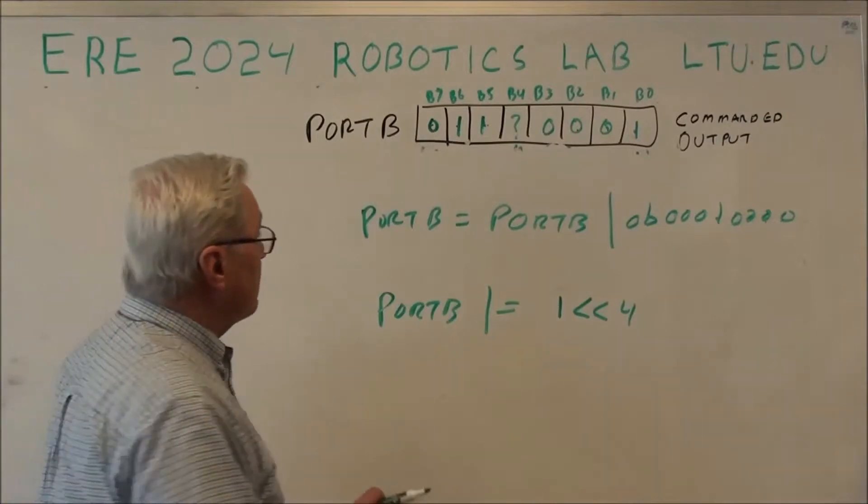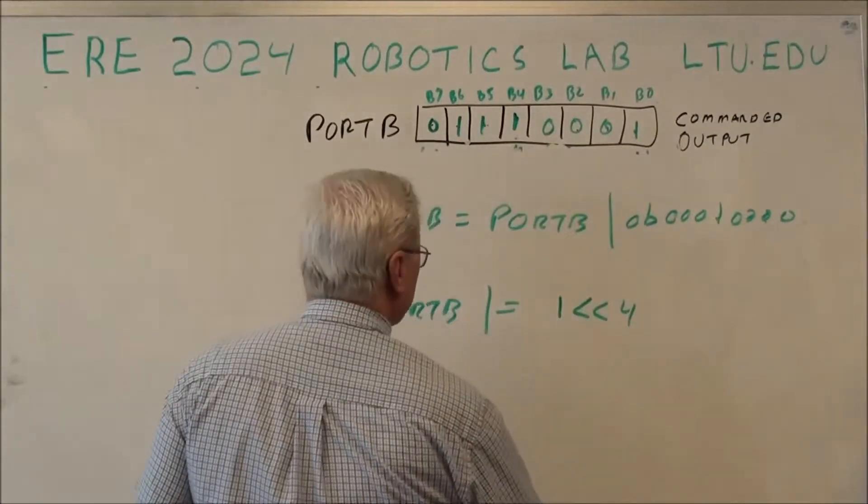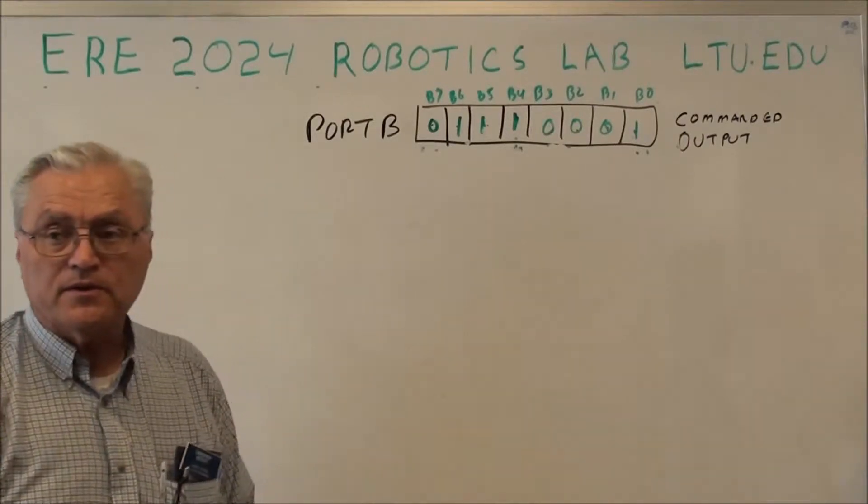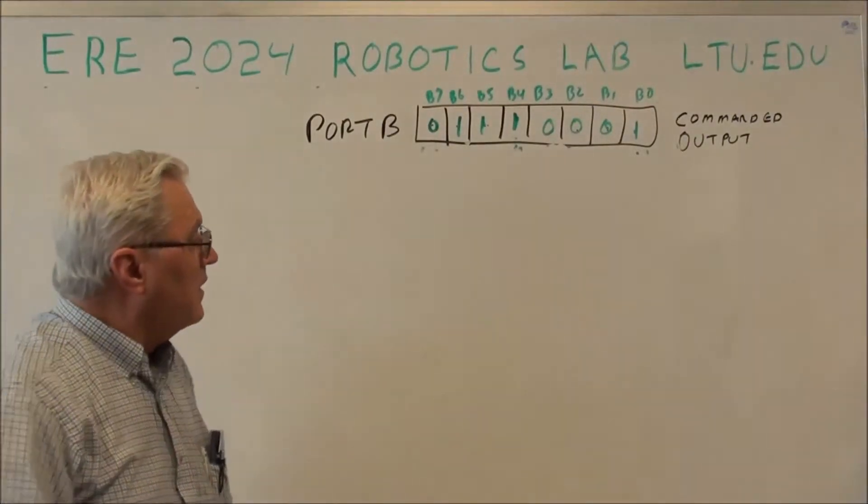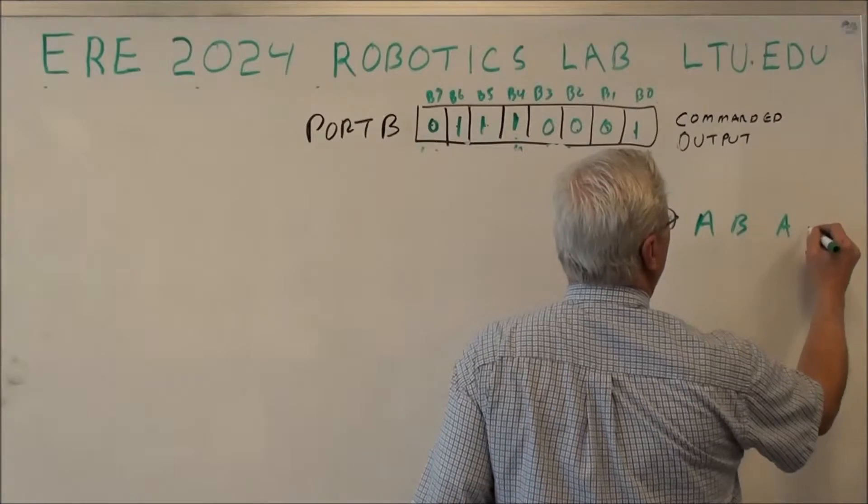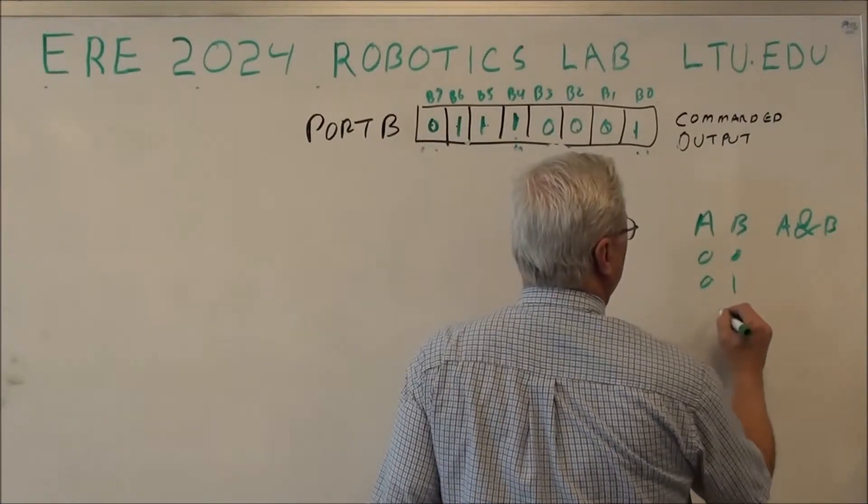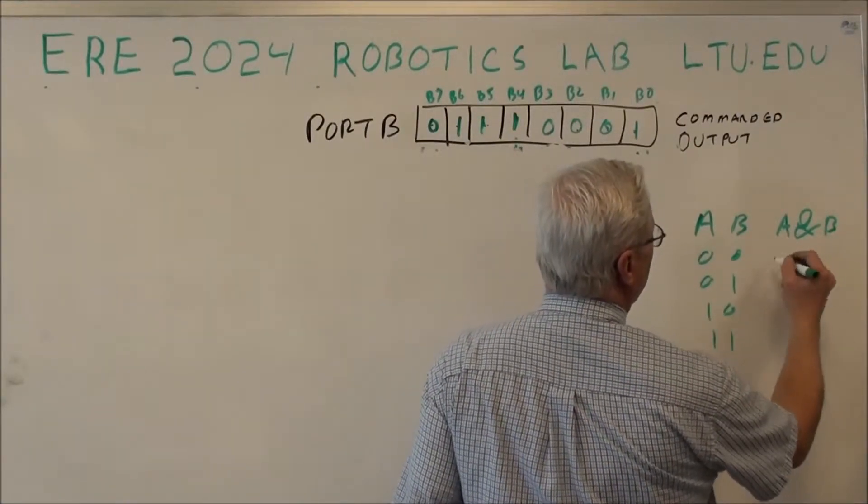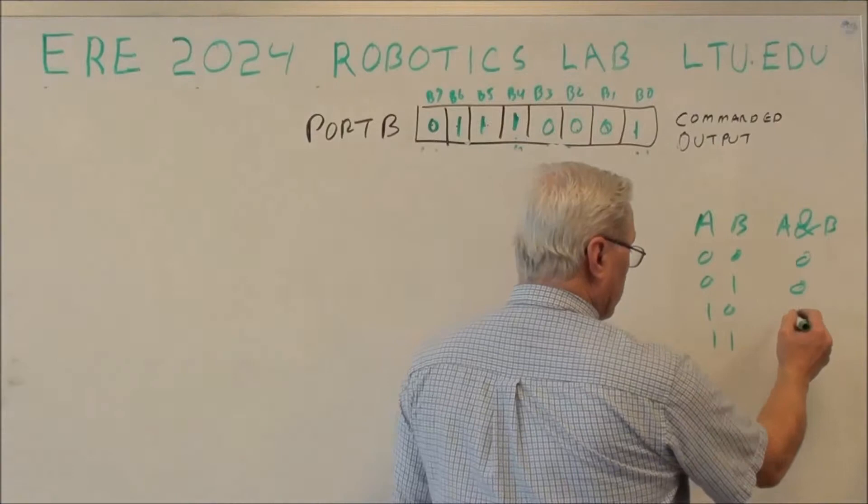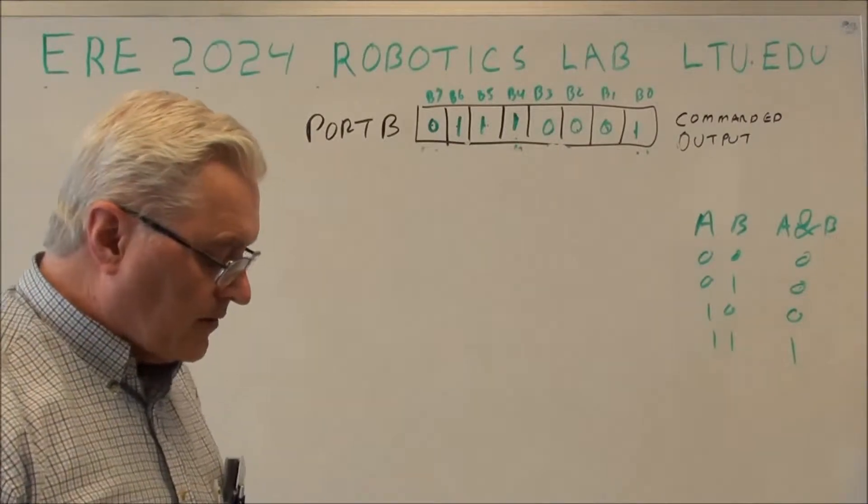Now, what happens if I have a 1 up here and I want to make it a 0? Obviously I can't OR with something because it's already a 1, it's going to stay a 1. What I can do is use an AND. Now if you remember, A and B: 0 and 0 is 0, 0 and 1 is 0, 1 and 0 is 0, 1 and 1 is 1. So we have 0 and 1 is still 0 and only if they're both 1 do we get that 1. So we can use an AND.